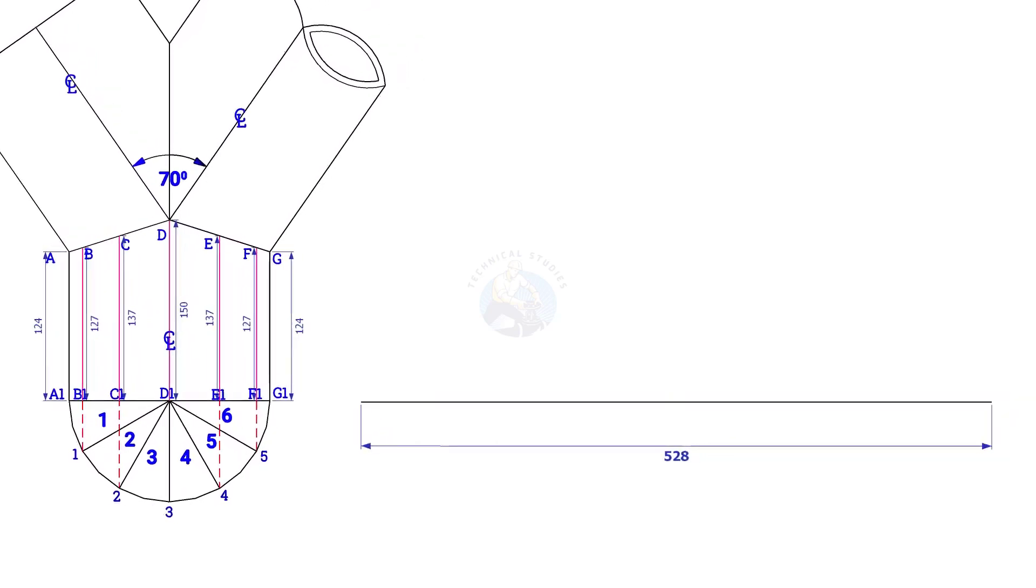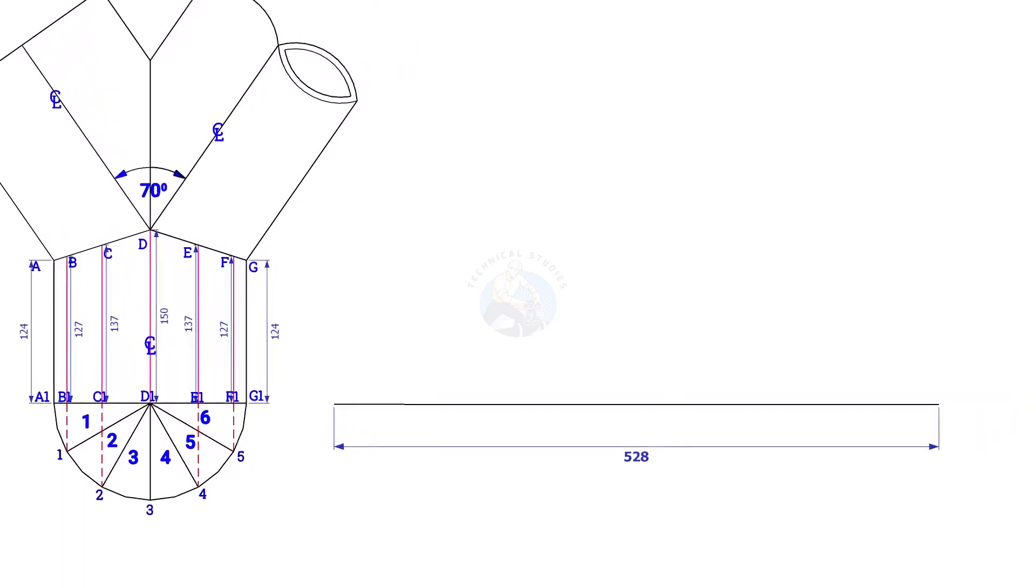Since we divided the half circle into 6 parts, divide the line into 12 equal parts. 528 divided by 12 is 44, so the length of each segment is 44 millimeters.